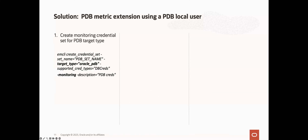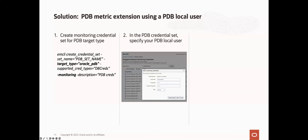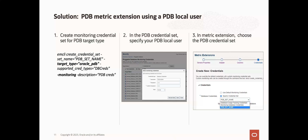To support this use case, we first enhanced our credential sets to support creation of a monitoring credential set specific to the PDB target type only. You use the EMCLI create_credential_set command and specify the target type of Oracle PDB and also add the monitoring flag. Once created, you can go to the monitoring credentials section of the console, choose your PDB, and specify the PDB local user as credential values for your new credential set. After you've done this, when you create your metric extension for the PDB, you can choose the PDB credential set that you've just created. That's it for the PDB enhancements.